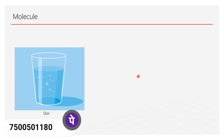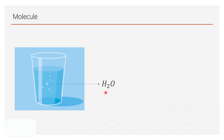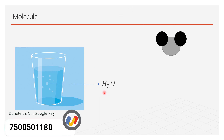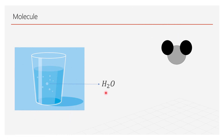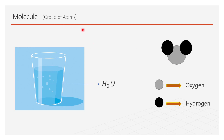Finally, we will discuss about molecules. This is a glass of water, and as you know, the molecular formula of water is H2O, where two hydrogen atoms combine with one oxygen atom to make water. This group is called a molecule of water. Molecules are groups of atoms, or we can say that groups of atoms are called molecules.